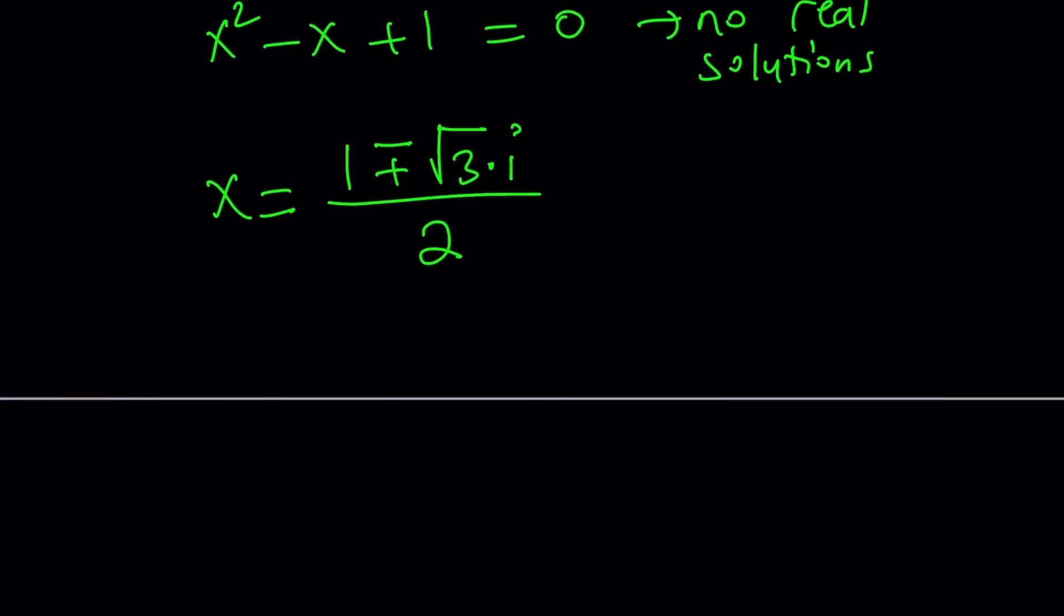Obviously you can also write these using Euler's formula as x equals e to the power i pi over 3, or x equals e to the power i times 5 pi over 3. You could also write it as 5i pi over 3, but I just wanted to emphasize the fact that here i is going to be multiplied by the angle, the positive angle which the number makes with the x-axis on the unit circle.